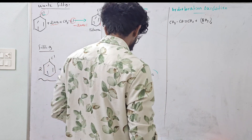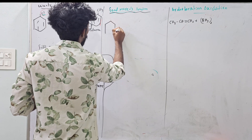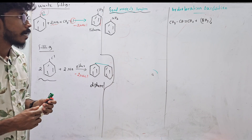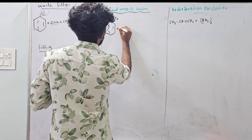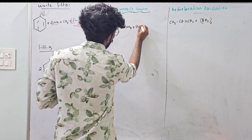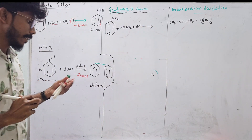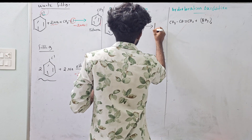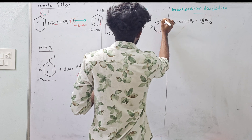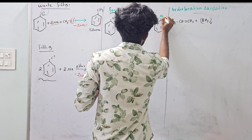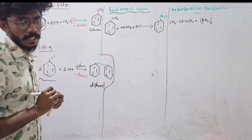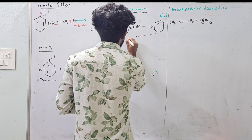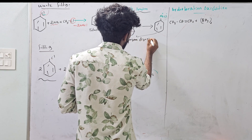In the Sandmeyer reaction, you have to take aniline. Let's learn the charge of N2+ and Cl−. This is Benzene Diazonium Chloride. This component is Benzene Diazonium Chloride.